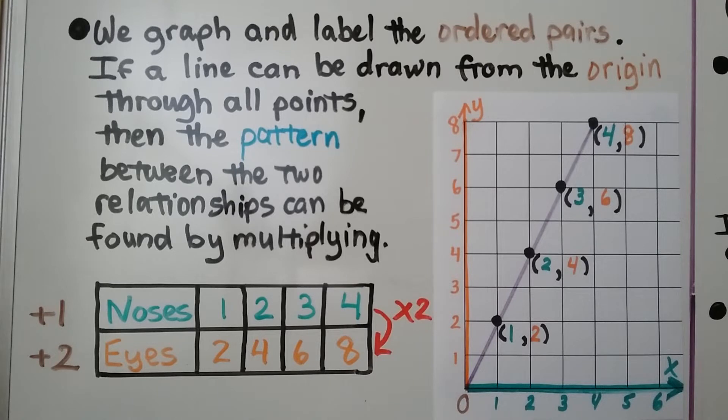We graph and label the ordered pairs. If a line can be drawn from the origin, remember that's the zero for x and the zero for y, if a line can be drawn from the origin through all points, then the pattern between the two relationships can be found by multiplying.